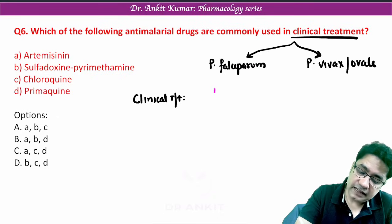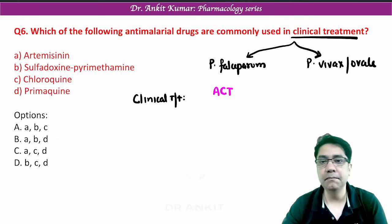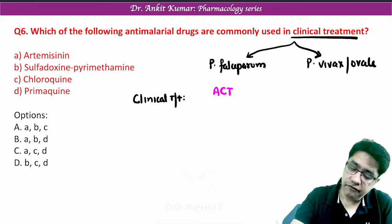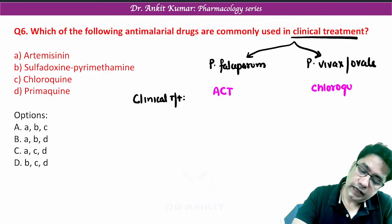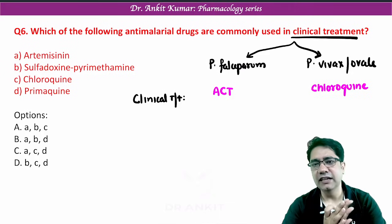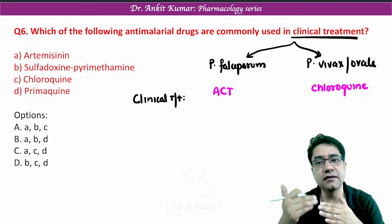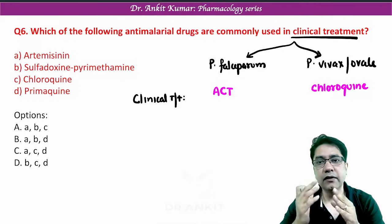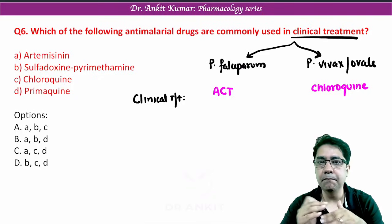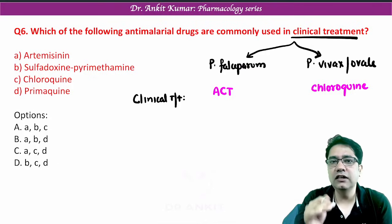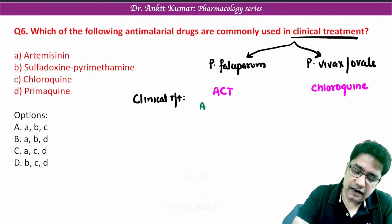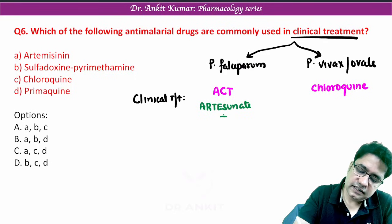In cases of P. falciparum we give ACT — artemisinin-based combination therapy — while in P. vivax and ovale we give chloroquine. We are not giving chloroquine in P. falciparum because P. falciparum is resistant to chloroquine. In all states of India except the northeastern states, we give artesunate with sulfadoxine-pyrimethamine combination.